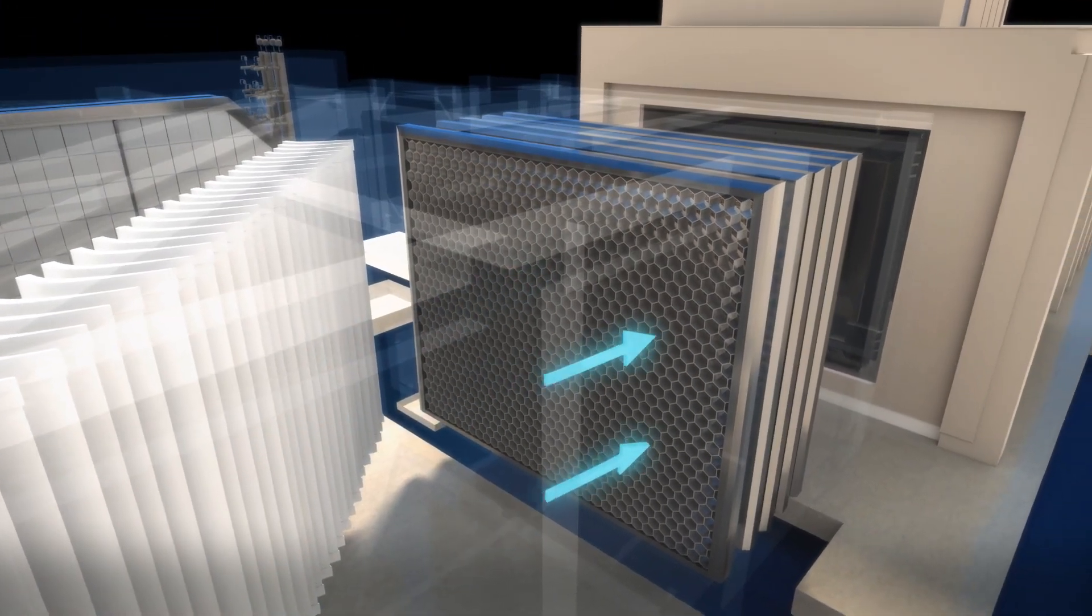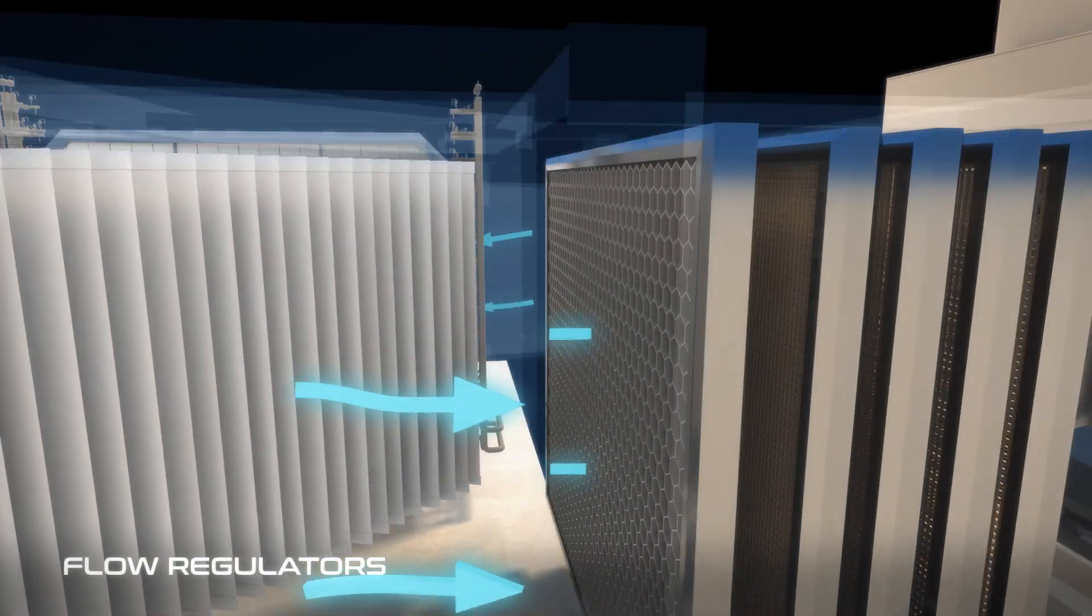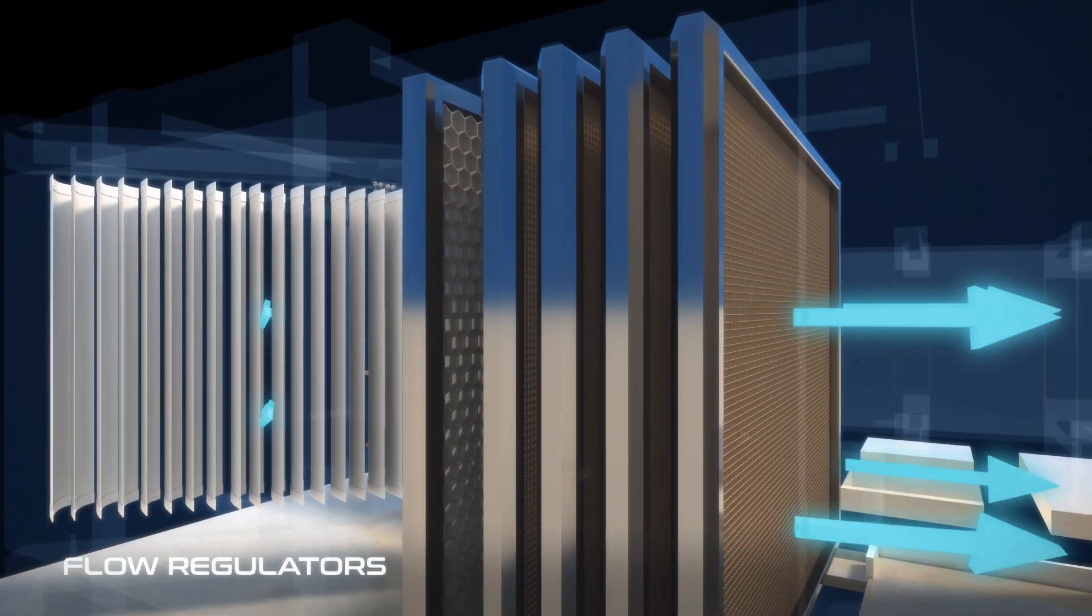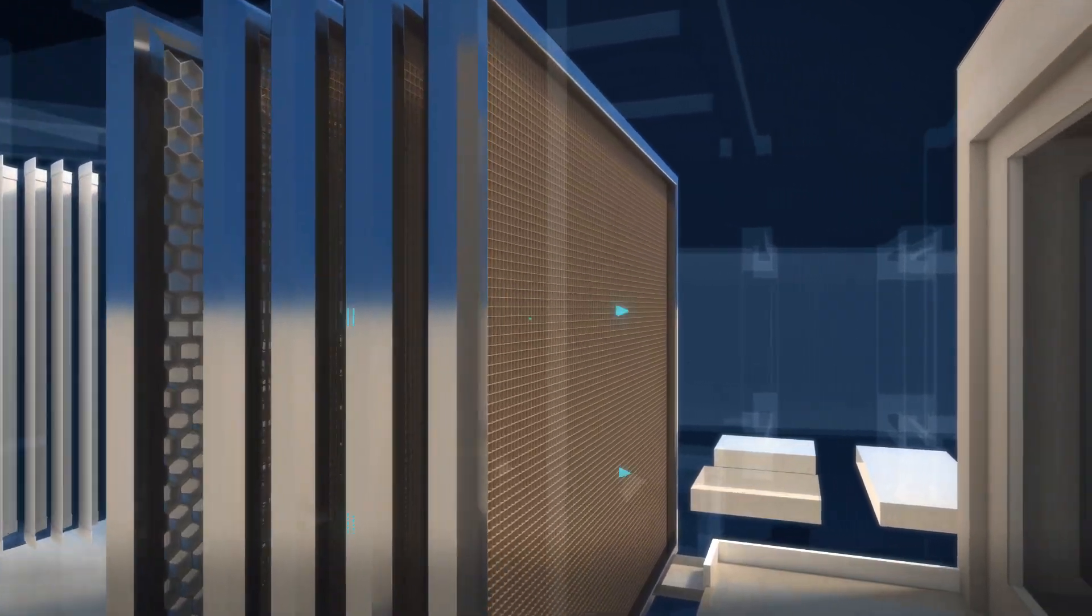Honeycomb structure and screens are responsible for preventing turbulences and correcting the circular air to provide turbulence-free air for ideal test conditions.